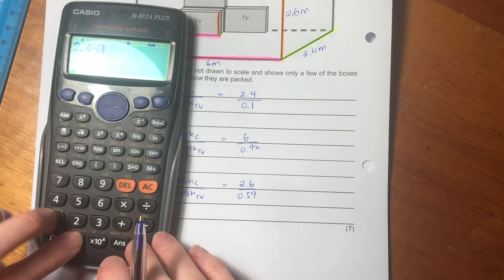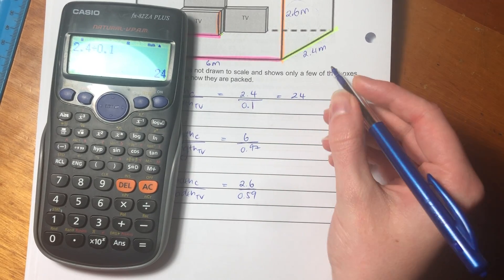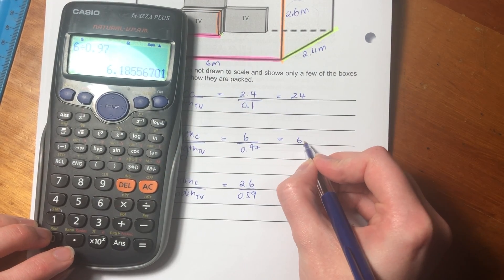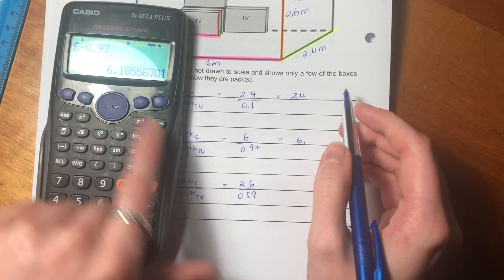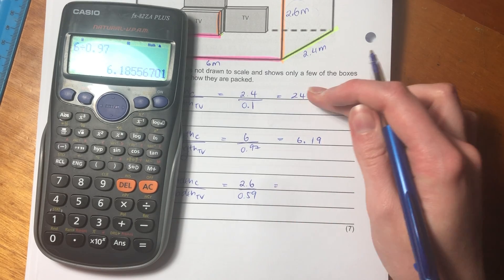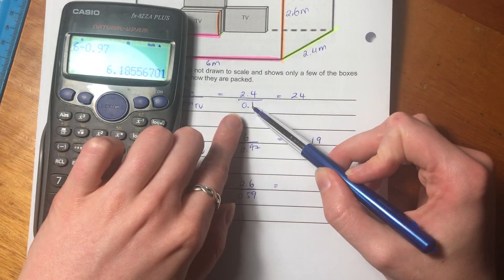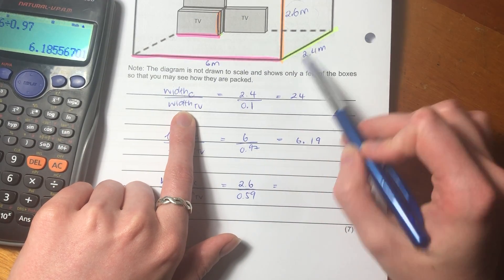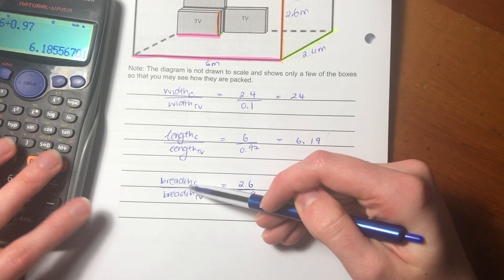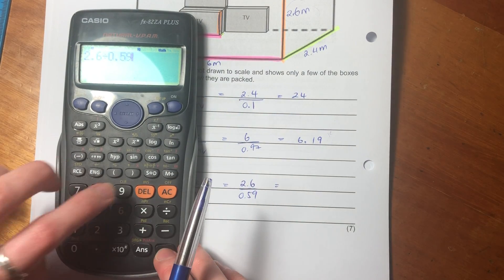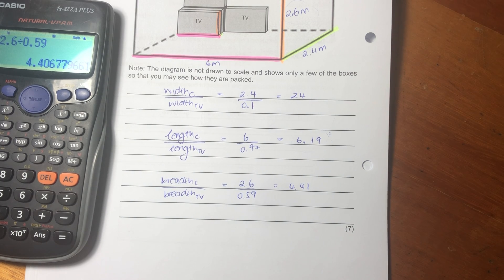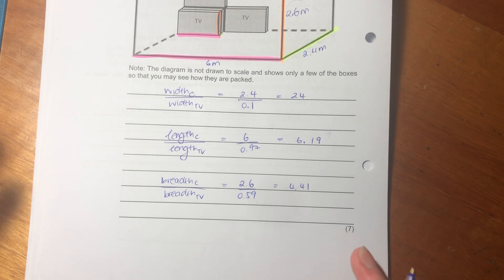They're not just water that can flow into any shape. They're a set shape. And that's what they're testing here. They're testing whether you understand that, which is quite a nuanced thing. It's not an easy one, but it's a very important one to remember. So you'll see here that I am just writing out the answer for each of these. This, I'm not putting a unit because this is just saying how many widths of the TV can fit into this width. So I'm just saying 24 widths, and here it's 6.19 lengths.